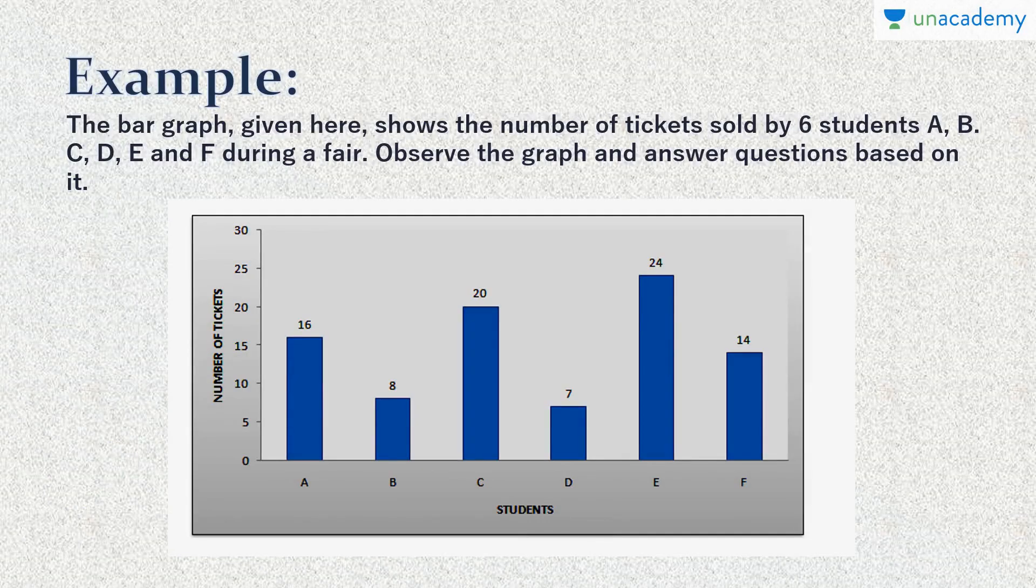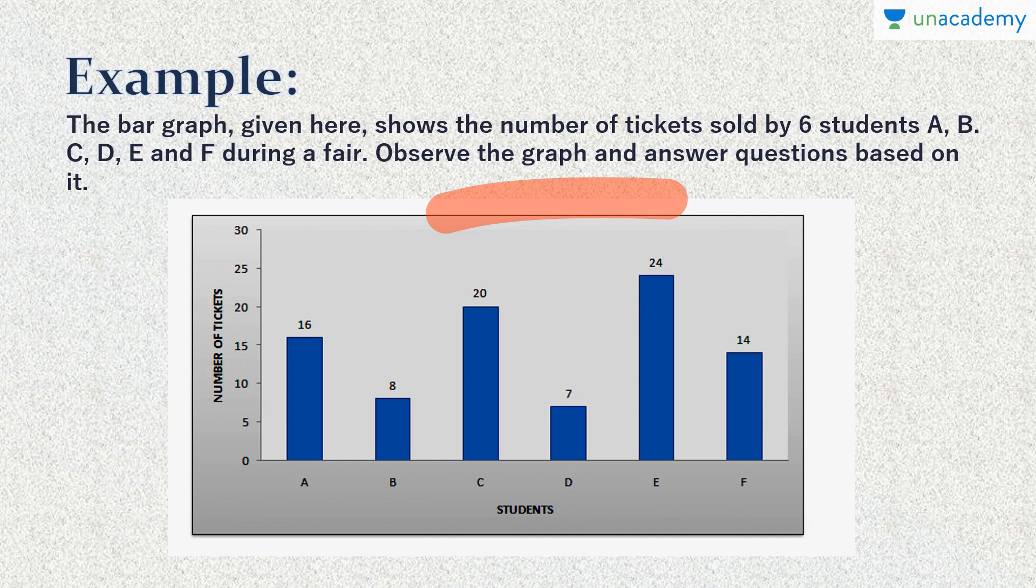Example: The bar graph given here shows the number of tickets sold by six students A, B, C, D, E, and F during a fair. Observe the graph and answer the questions based on it. As we can see here, we have a bar graph where on the y-axis we have the number of tickets sold by the students, and on the x-axis we have the students A to F. We can see A has sold 16 tickets, B 8, C 20, D 7, E 24, and F 14. We easily have the complete information with us. We should now proceed with the questions and solve them.